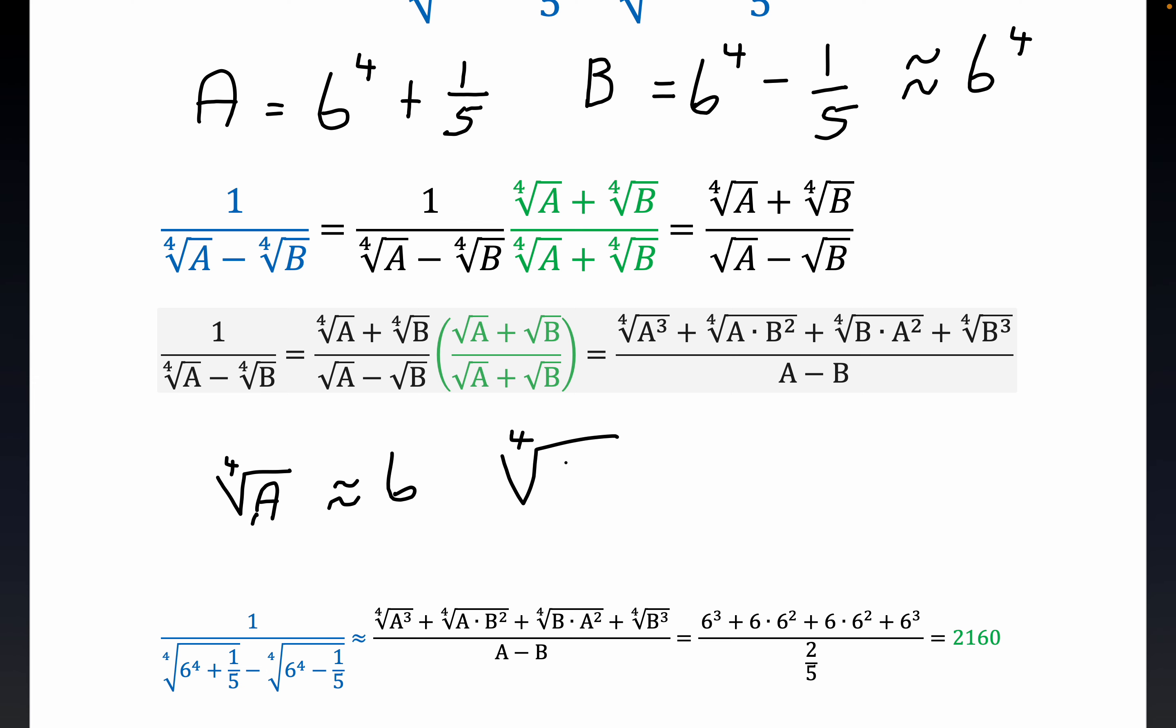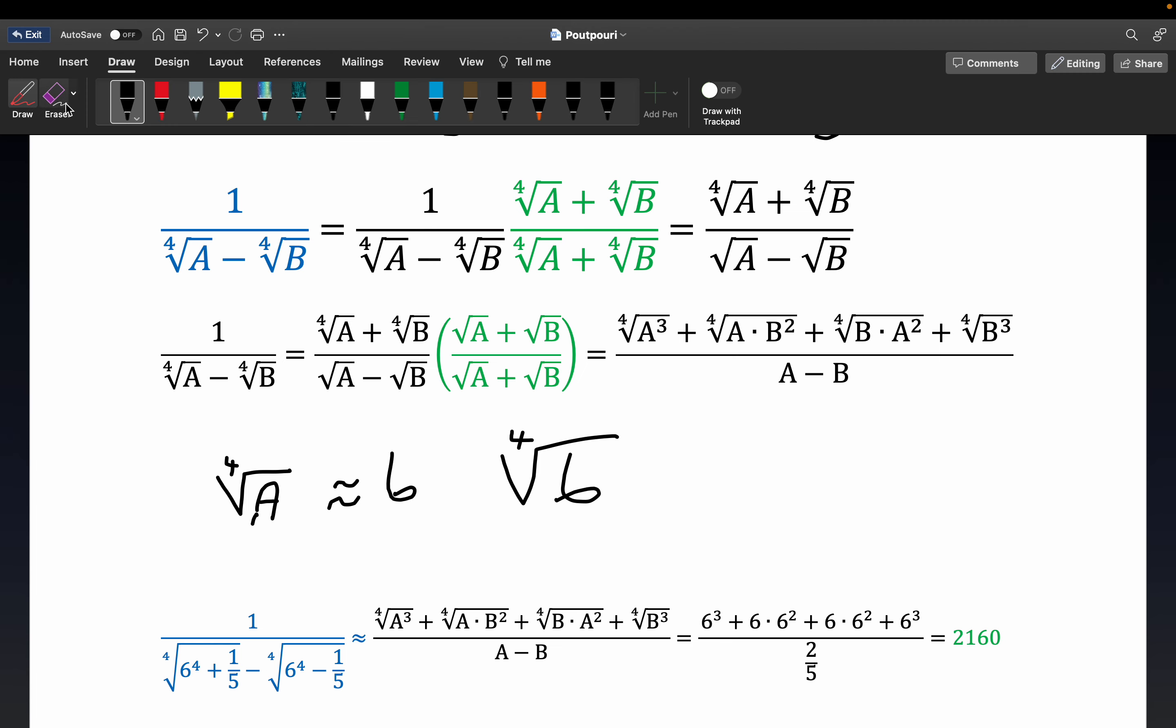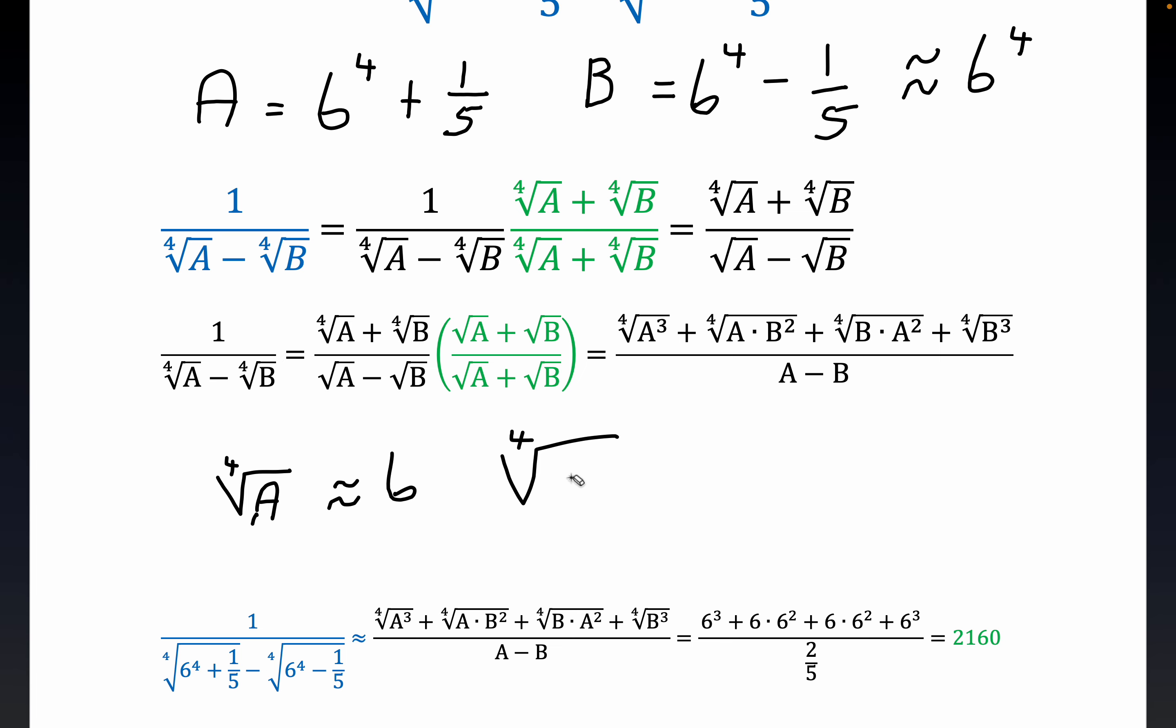Now I'll be the first to say this isn't rigorous, but they're very close, right? Six to the fourth is a huge number compared to one-fifth. Likewise over here with six to the fourth minus one-fifth. So we're approximating both fourth roots. The fourth root of B is also, the approximation will be six.